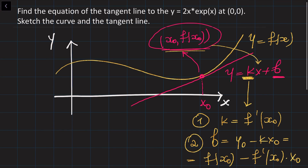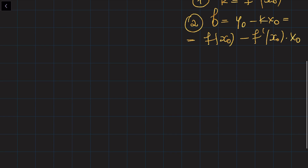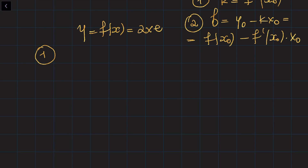We are given the curve y equals 2x times e to the power of x, and we are given the point — the coordinates are simply 0 and 0. We just need to plug everything in and find the equation of the tangent line. So the function is f of x equals 2x times e to the power of x.